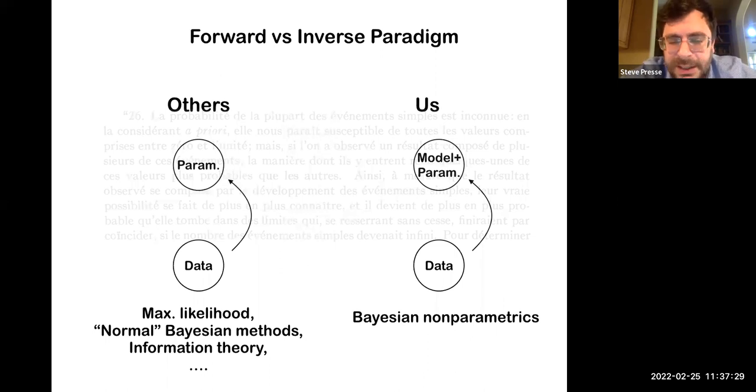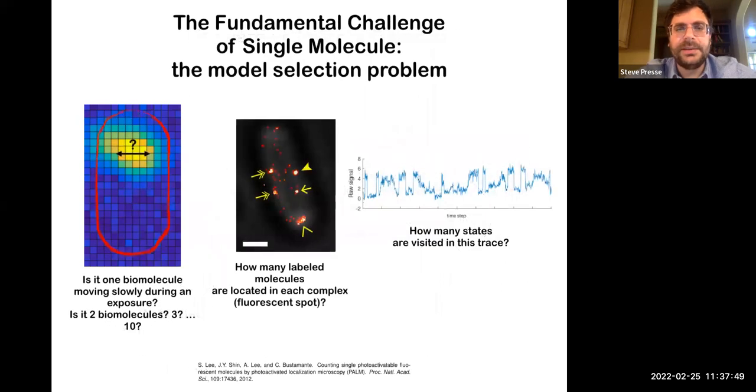So on the left hand side, you have methods such as maximum likelihood, normal, in other words, parametric Bayesian methods, information theory, and so forth. On the right hand side, what you have is sort of the domain of Bayesian nonparametrics, a rigorous and logical extension, principled extension of parametric Bayesian methods.